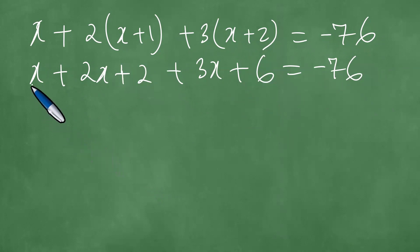Upon further addition, we have x plus two x plus three x, and these give us exactly six x. Two plus six give us eight, and therefore we have minus 76 minus eight. So we have six x equals minus 84.